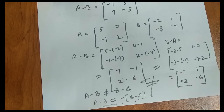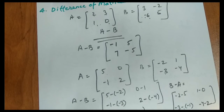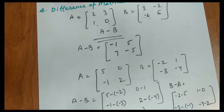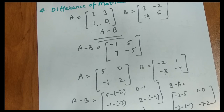So the difference of matrices does not follow the commutative law property. These are the basic operations performed on matrices. I hope it is clear. If you have any doubts, please mention them in the comment section. In the next video we will discuss scalar multiplication and matrix multiplication with examples. Please don't forget to subscribe and like this video. Thank you.